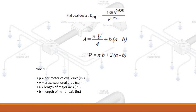Where P equals the perimeter of the oval duct in inches, A equals cross-sectional area in square inches, a equals the length of the major axis in inches, and b equals the length of the minor axis in inches.